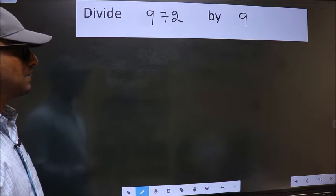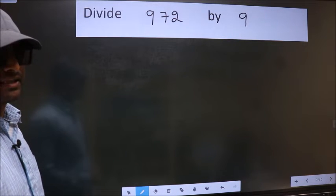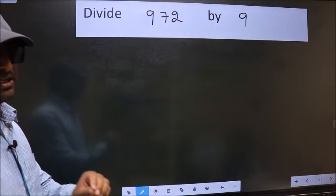Divide 972 by 9. To do this division, we should frame it in this way.